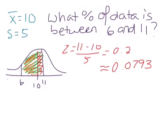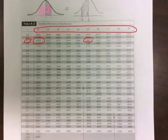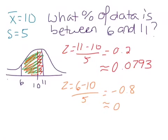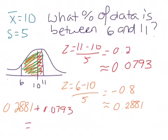Now for the orange area corresponding to 6: 6 minus 10 over 5 gives negative 0.8, negative because it's below the mean. Looking up 0.8 in the z-table gives 0.2881. Adding the two areas together: 0.2881 plus 0.0793 equals 0.3674, so 36.74% of the data falls between 6 and 11.